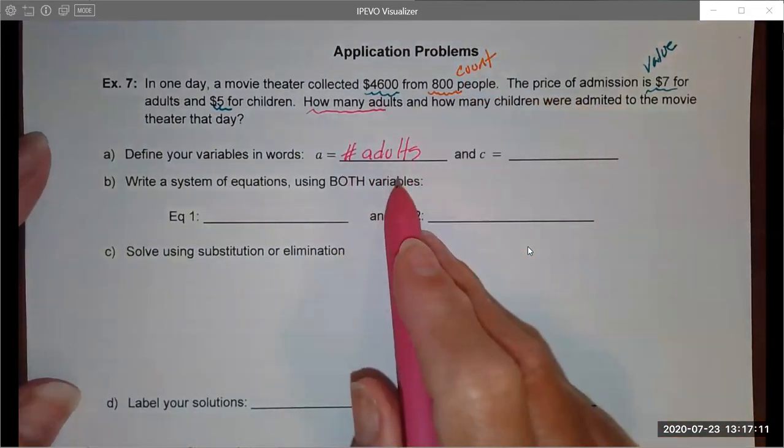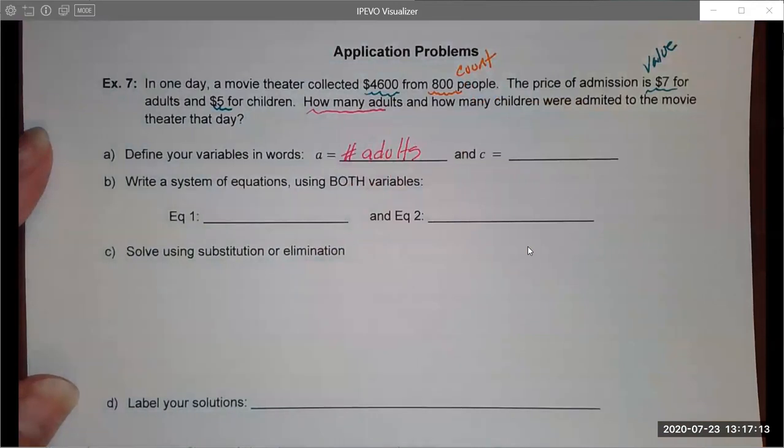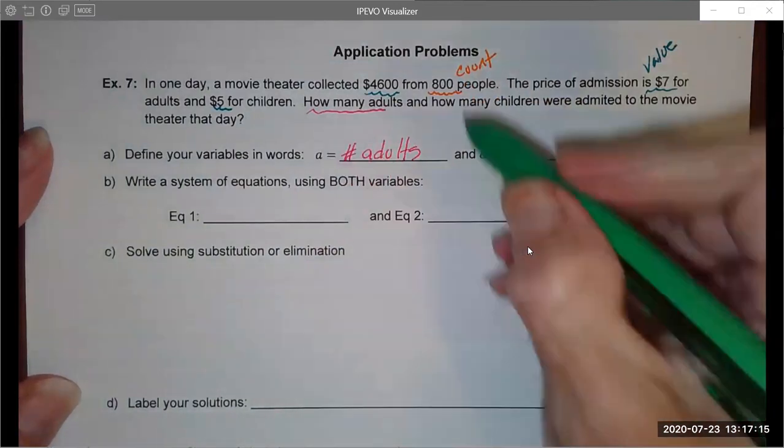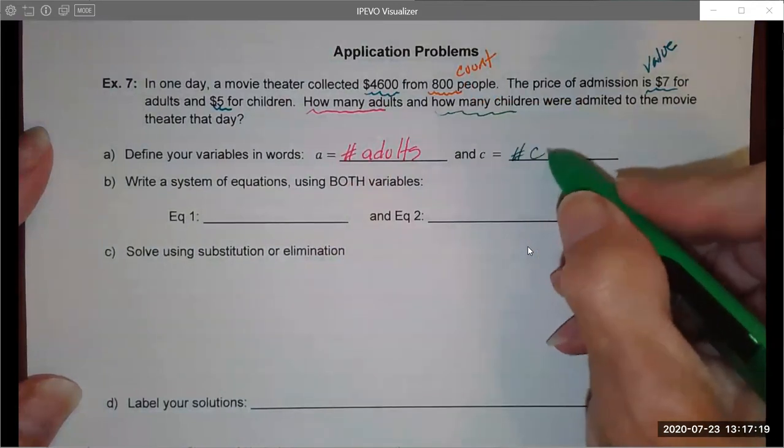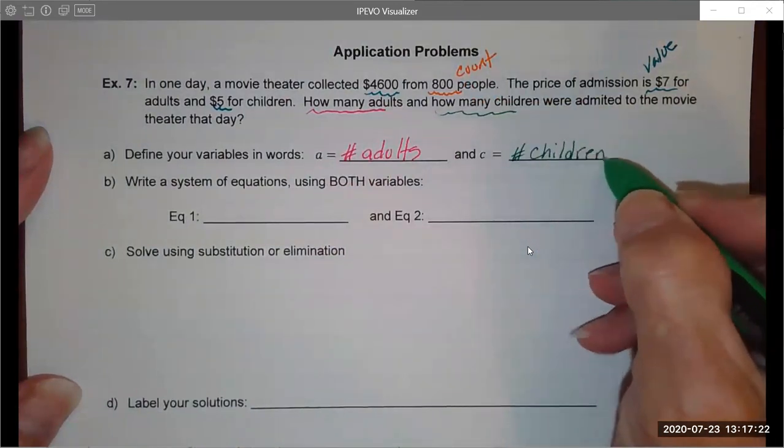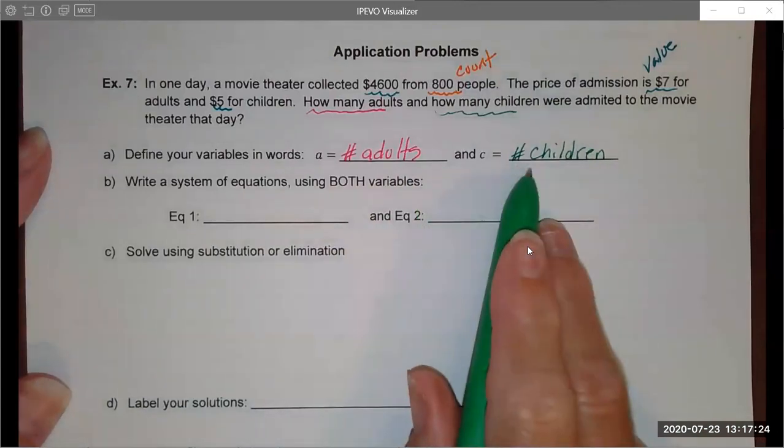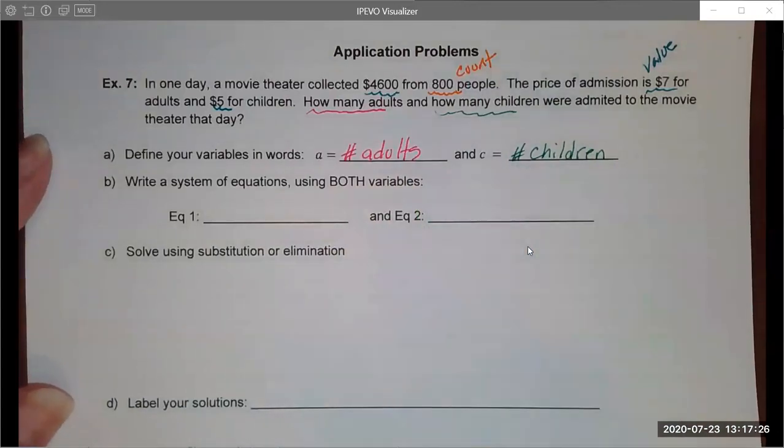It's helpful to write down what your variables are in case you get confused later. The other thing it's asking for are children, number of children. That's how I know it's going to be a system of equations because I have two variables. If you have two variables, you need two equations. Now we have our variables and can write our equations.